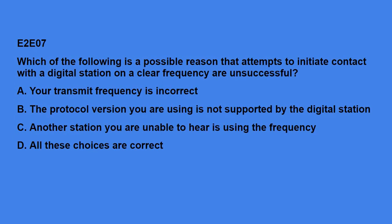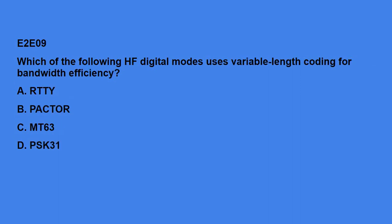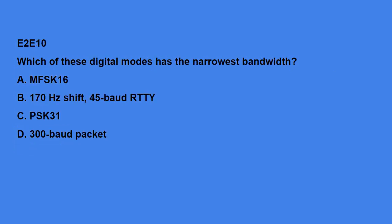E2E07: Which of the following is a possible reason that attempts to initiate contact with a digital station on a clear frequency are unsuccessful? All of these choices are correct — your transmit frequency is incorrect, the protocol version you're using is not supported by the digital station, or another station you're unable to hear is using the frequency. E2E08: Which of the following HF digital modes can be used to transfer binary files? Pactor. E2E09: Which of the following HF digital modes uses variable-length coding for bandwidth efficiency? PSK-31. E2E10: Which of these digital modes has the narrowest bandwidth? PSK-31.